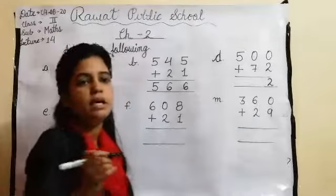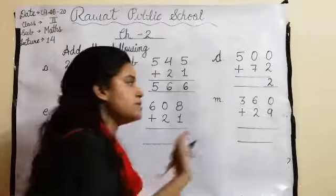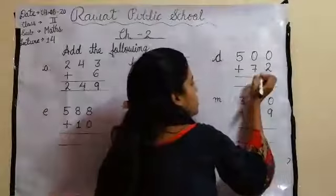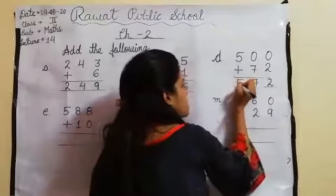Ya aise hoga 4 plus 0. 0 pehle ho ya baad mein ho, answer jo woh number aap us mein plus karein wohi aayega. 0 plus 7 to 7. 5 ka 5 as it is.